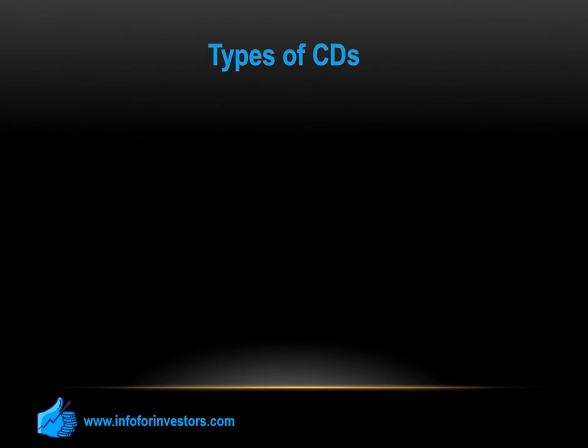There are many different types of CDs. The first and most common one is a traditional CD. Its characteristics are a fixed term, like three months, six months, a year, etc., and a fixed interest rate, for example 1.5%. If you withdraw before the maturity ends, you have to pay a penalty, and it offers protection by the FDIC if the deposit does not exceed $250,000.